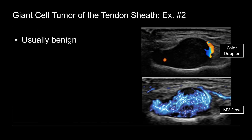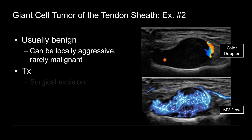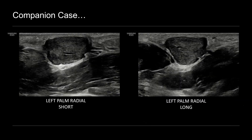These tumors are usually benign. They can be locally aggressive and very rarely malignant. The treatment is typically surgical resection. Let's look at a companion case. This is a patient that presented with a mass at the radial aspect of the palm — so again, we're on the ventral aspect — and we see this hypoechoic solid-appearing mass with lobulated margins. There's the underlying hand and thenar musculature.